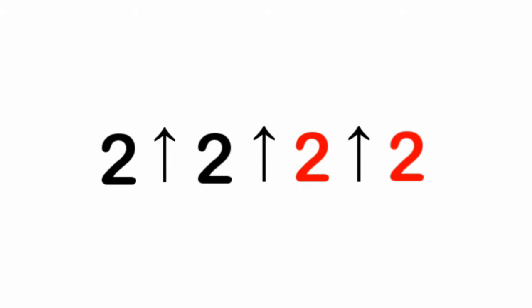2 to the power of 2, that's equal to 4. 2 to the power of 4, that's equal to 16. Now, 2 to the power of 16, that's a big number.